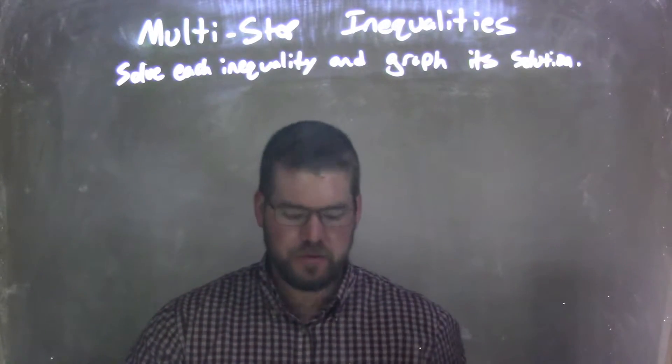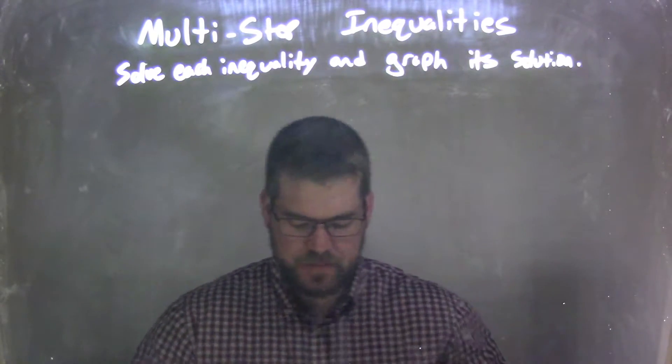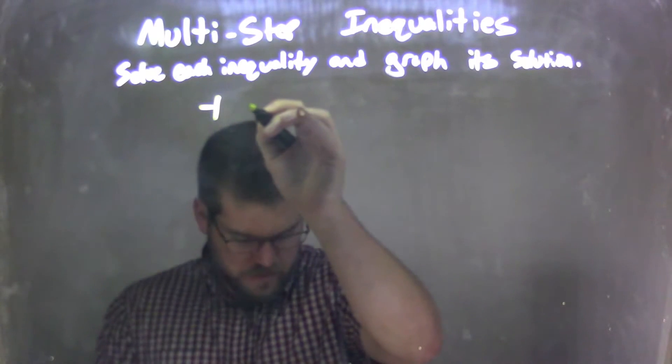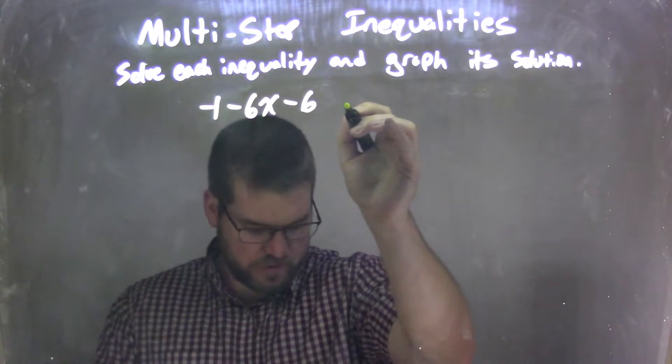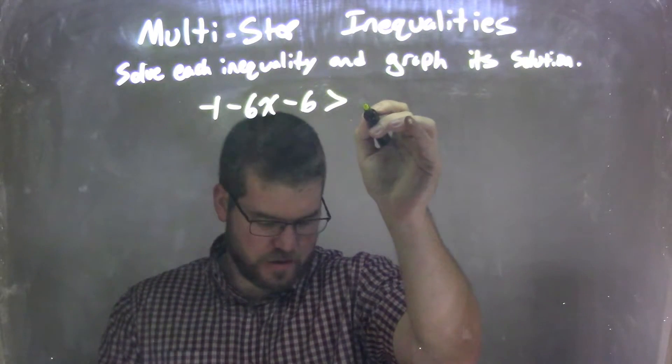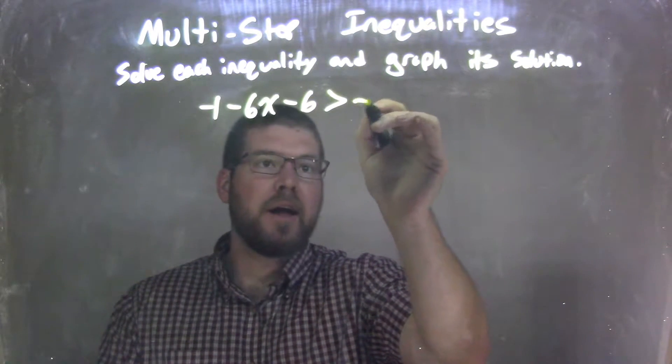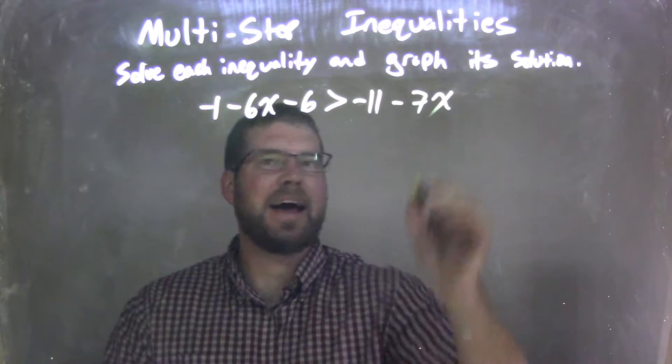Solve the inequality and graph the solution. So if I was given this inequality, negative 1 minus 6x minus 6 is greater than negative 11 minus 7x.